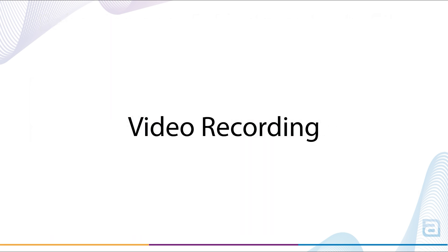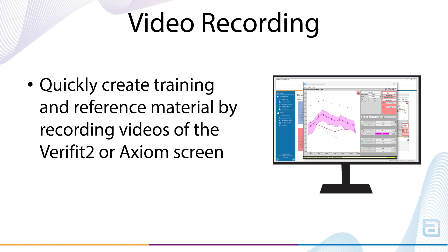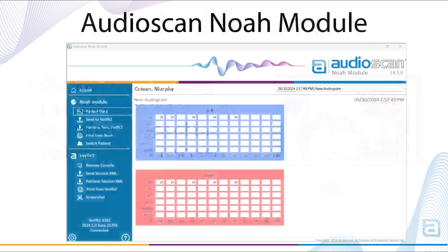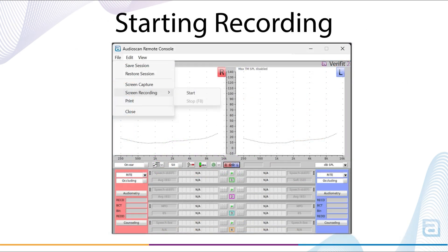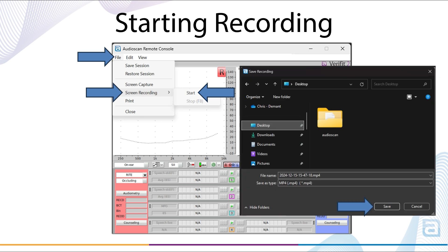Video recording the Verifit 2 or Axiom is a simple way to help with creating training and reference material for teaching students and clinicians. When the AudioScan NOAA module is connected to your Verifit 2 or Axiom, video recording of your screen is accessed by selecting Remote Console. Once Remote Console is open and showing the Verifit 2 or Axiom screen, select File, Screen Recording, and Start. Select Save when the File Explorer pops up and the recording will save to the specified folder named according to the date and time.